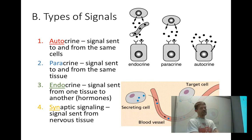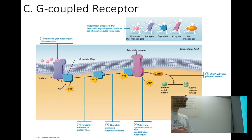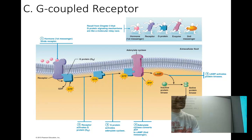Synaptic signaling happens whenever you move your muscles — your nerves send impulses to muscle cells. That's it for the lecture. Any questions?